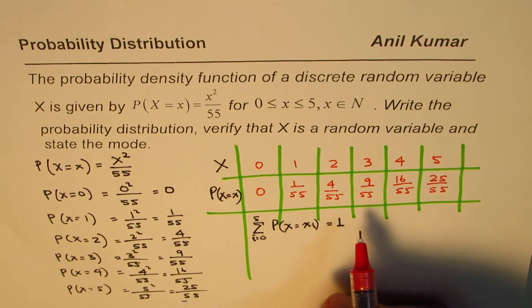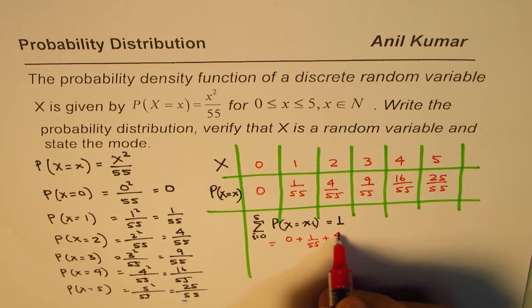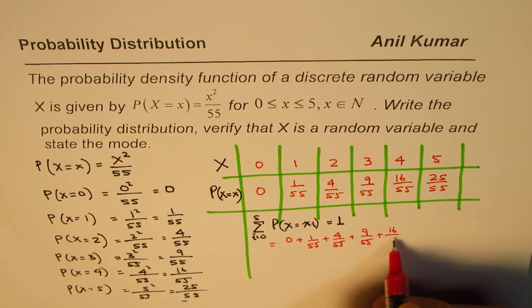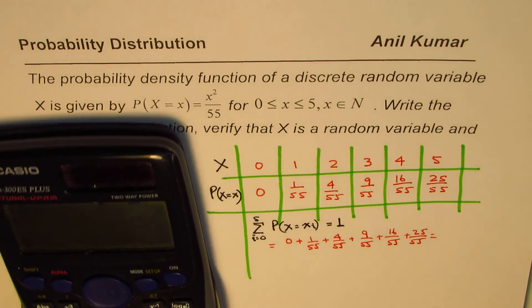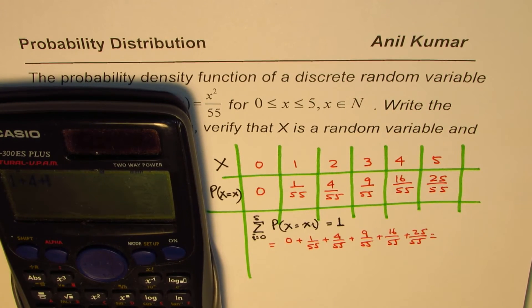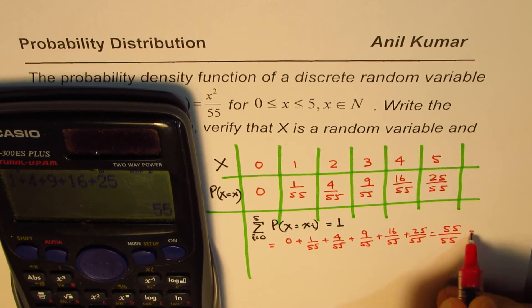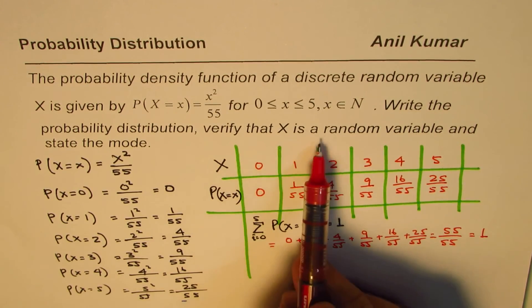So let's add this up. What we have here is, this sum is 0 + 1/55 + 4/55 + 9/55 + 16/55 + 25/55. Let's add the numerators, denominators are the same, 55. So it is 1 + 4 + 9 + 16 + 25 equals 55. So we get 55/55, which is indeed 1. Since their sum is 1, we have verified that x is a random variable.